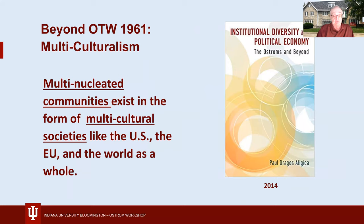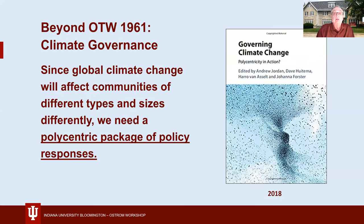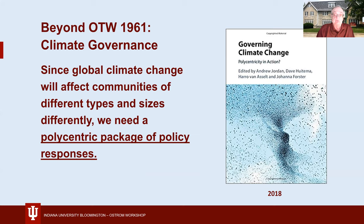This notion of fitting governing institutions to the arrangements found in multinucleated communities is now more generally relevant, given the substantial mixing of diverse ethnic, religious, and cultural communities throughout the world today. In a 2014 book, Paul Dragos Alisha argued that polycentric governance is uniquely suited to support democratic governance in multicultural societies. This suggests that Ostrom, Tiebout, and Warren may not have fully realized just how broadly important the concept of polycentric governance could turn out to be for the world as a whole.